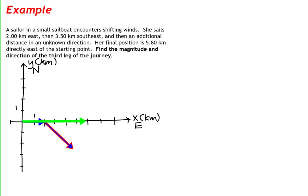We are told where the sailboat ends up. The sailboat's final position is 5.8 kilometers directly east of the starting point, which is on the positive x-axis.